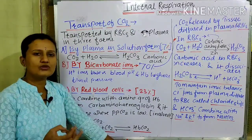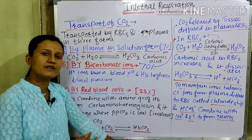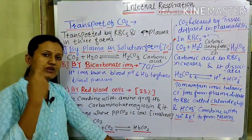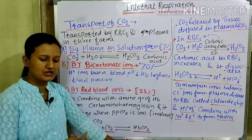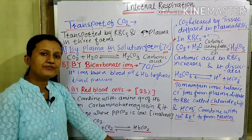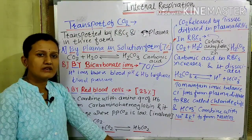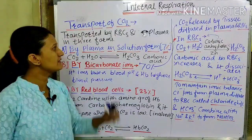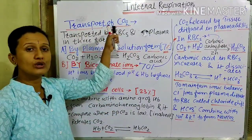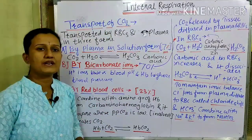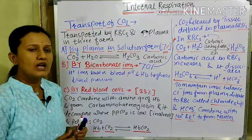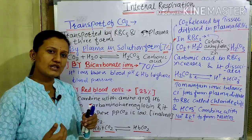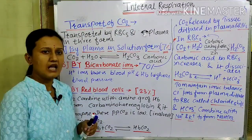We get three things from respiration — energy, CO2, and water — from cellular respiration, from mitochondrial respiration. CO2 is produced and water is produced. After CO2 is formed in the cells, how is it transported? How does it reach the lungs? Now we look at the reverse flux — how CO2 formed in the body is expelled outward.